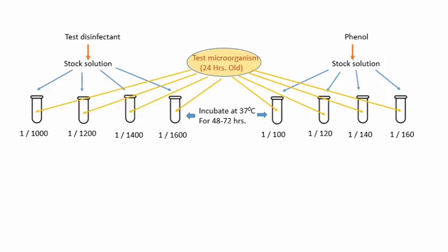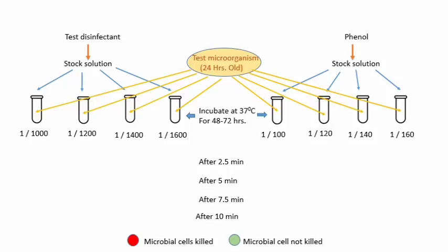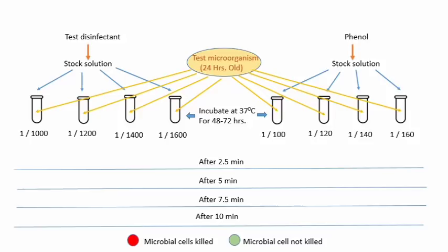Iske baad har 2.5 minute, 5 minute, 7.5 minute, aur 10 minute ke baad har dilution mein se inoculating loop ki help se sample nikalkar use recovery culture media mein add kiya jaata hai. Phir yeh check kiya jaata hai ki kis dilution waale disinfectant ne kitne time mein microorganism ko kill kiya, aur kis dilution mein kis time par microorganisms kill nahi hue. Yahan par 4 sets phenol ke aur 4 sets test disinfectant ke hain — unhe hum ek table ke through dikhate hain ki kis dilution ne kitne time mein bacteria ko kill kiya ya nahi.